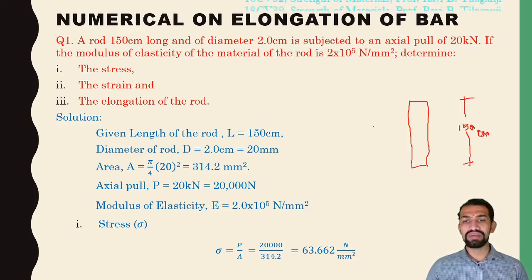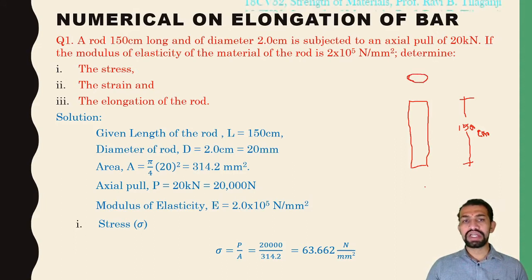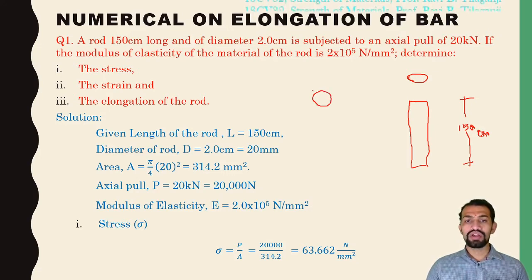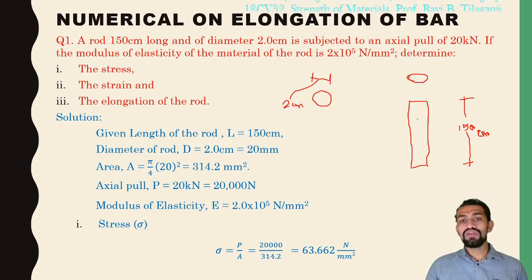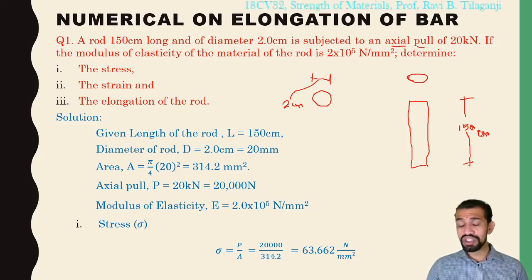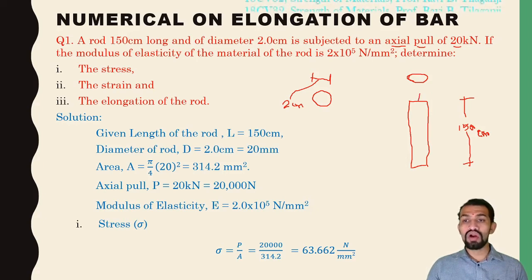The diameter means it is a circular cross-section. So we draw a small circular section here — a circle with a diameter of 2 centimeters. Then there is an axial pull; pull means we consider a tension of 20 kilo Newtons. Pull means the rod is going to be pulled away from its edges.